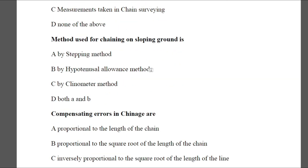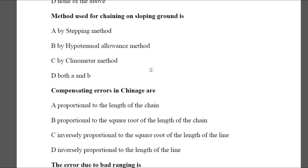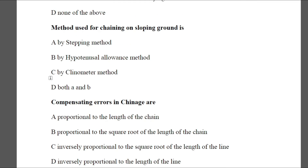Question 14: The method used for chaining on sloping ground is — Option A: by stepping method, Option B: by hypotenusal allowance method, Option C: clinometer method, Option D: both A and B. The answer is D — both A and B.